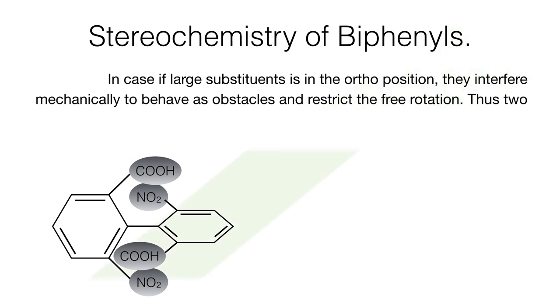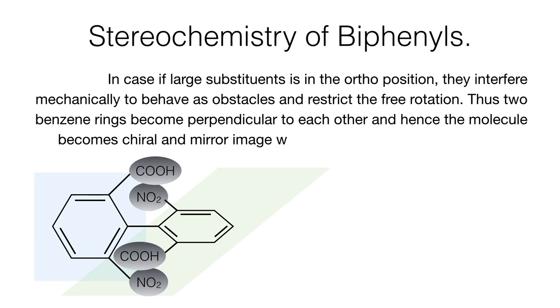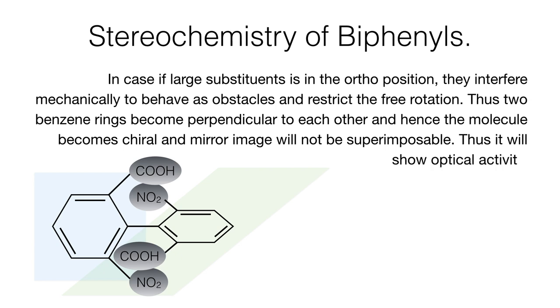Thus, the two benzene rings become perpendicular to each other and hence the molecule becomes chiral. The mirror image will not be superimposable. Thus, it will show optical activity.